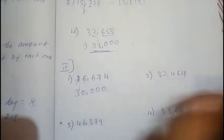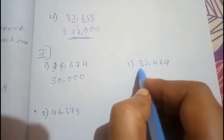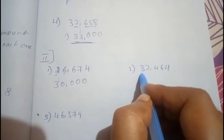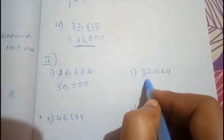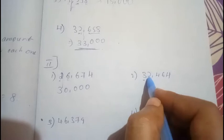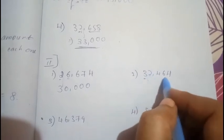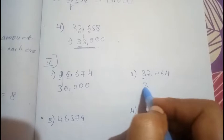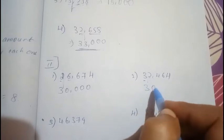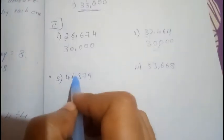For the second question, identify the ten thousands place and mark a line in your mind. The thousands digit is less than five, so just replace all digits after the ten thousands place with zeros. Your answer is 30000.